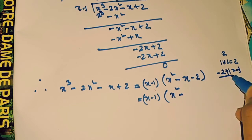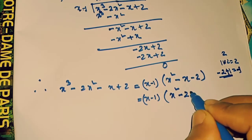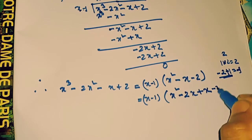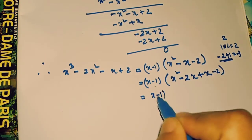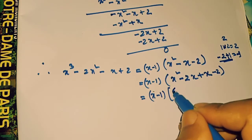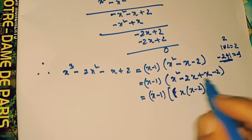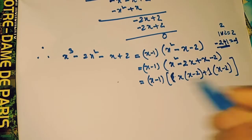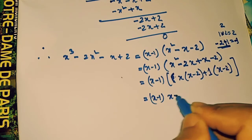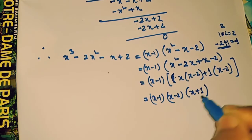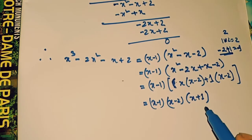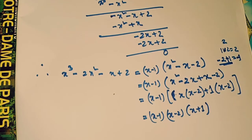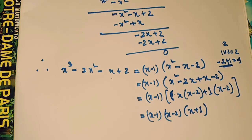2x plus 1, x minus 2. x minus 1, x minus 2. x minus 2 plus 1, x minus 2. x minus 1, x minus 2, x plus 1. x minus 1, x minus 2, x plus 1. x minus 1, x minus 1, x minus 2, x plus 1, x minus 1.